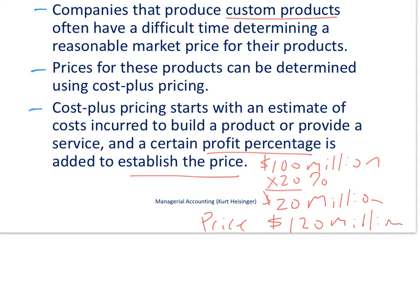So we simply take the original cost to manufacture the product — in this example 100 million dollars — add our desired profit percentage of 20%, or 20 million dollars, and that gives us the price. In this example, 120 million dollars.